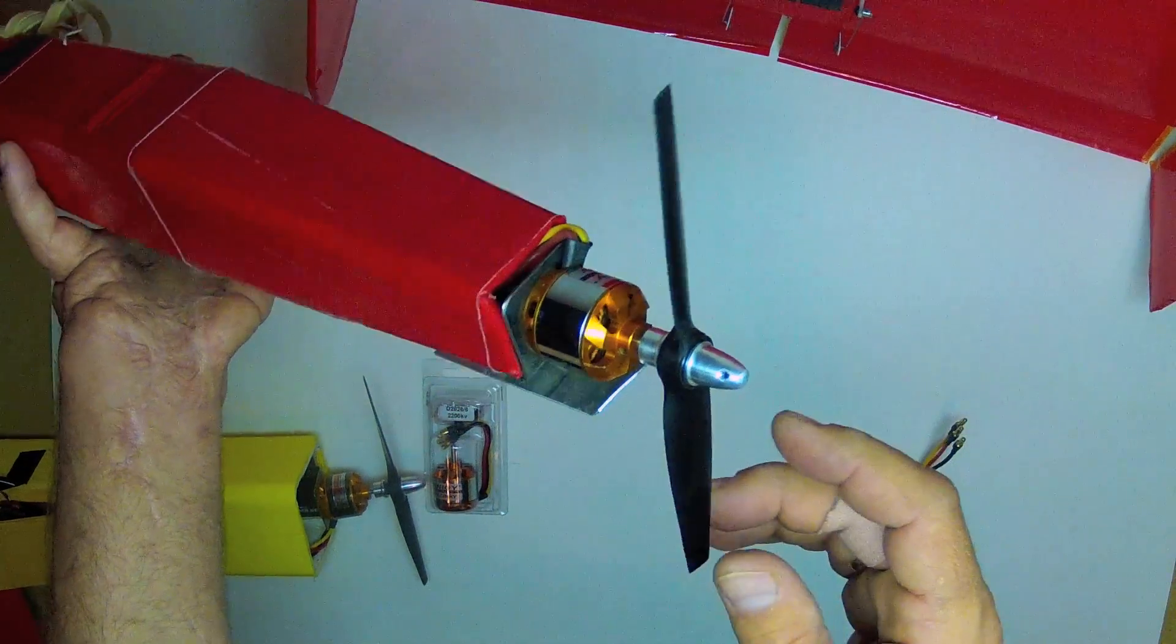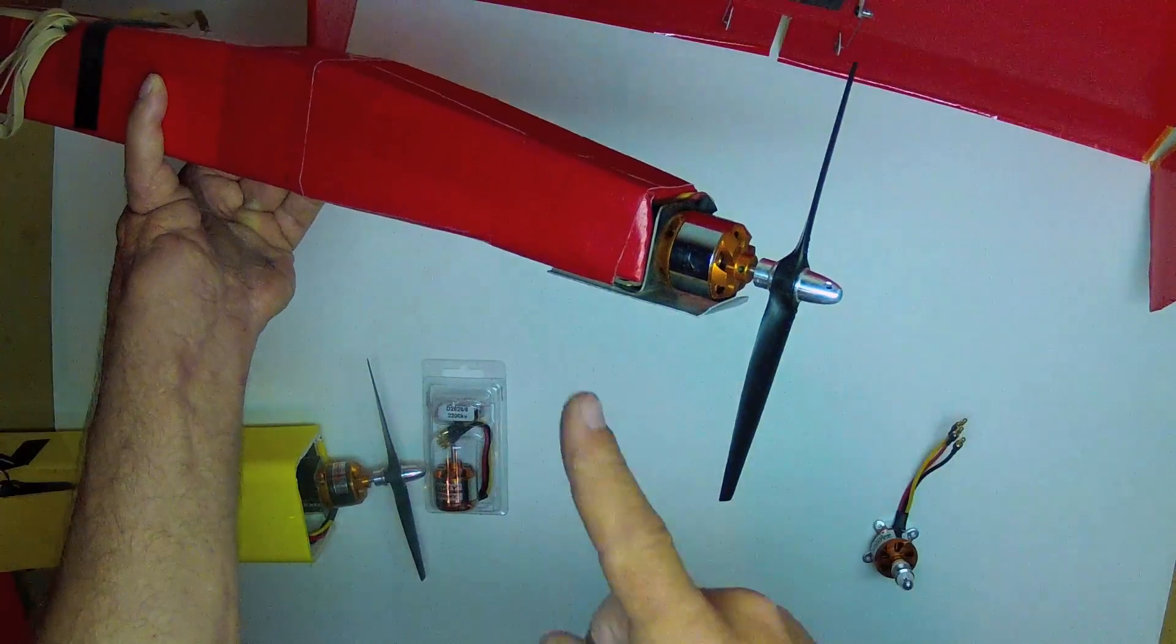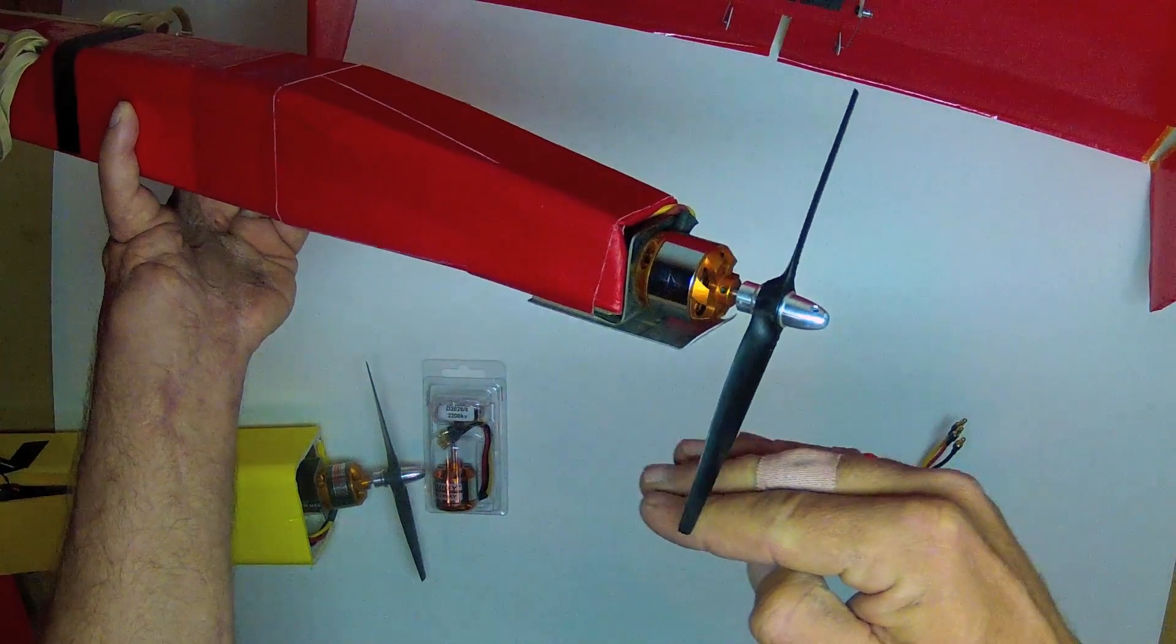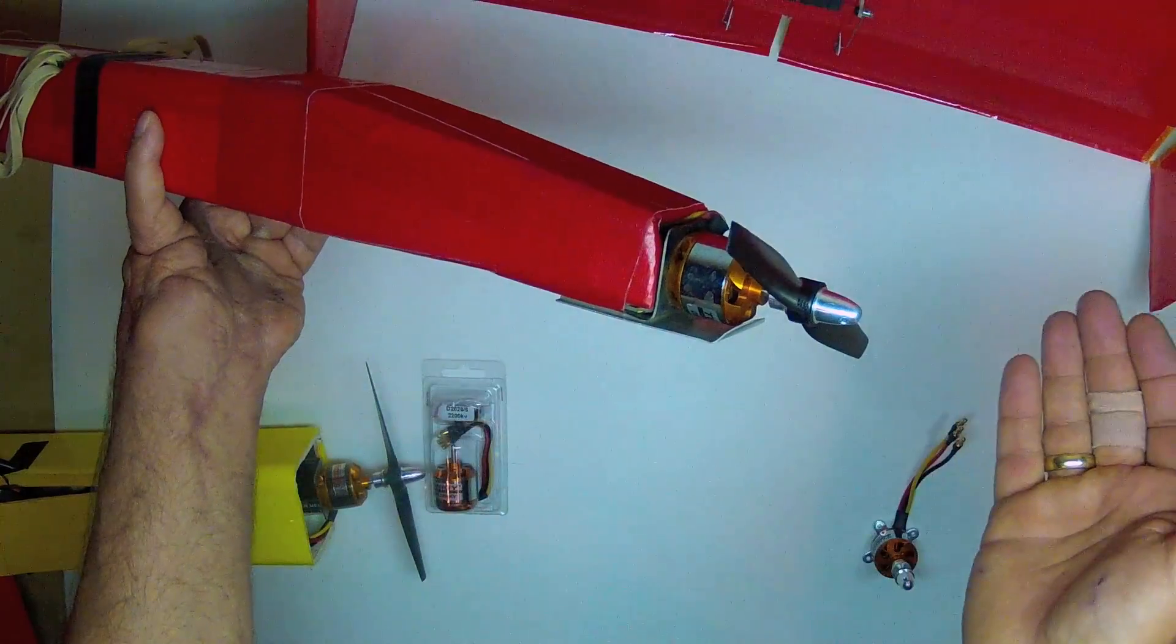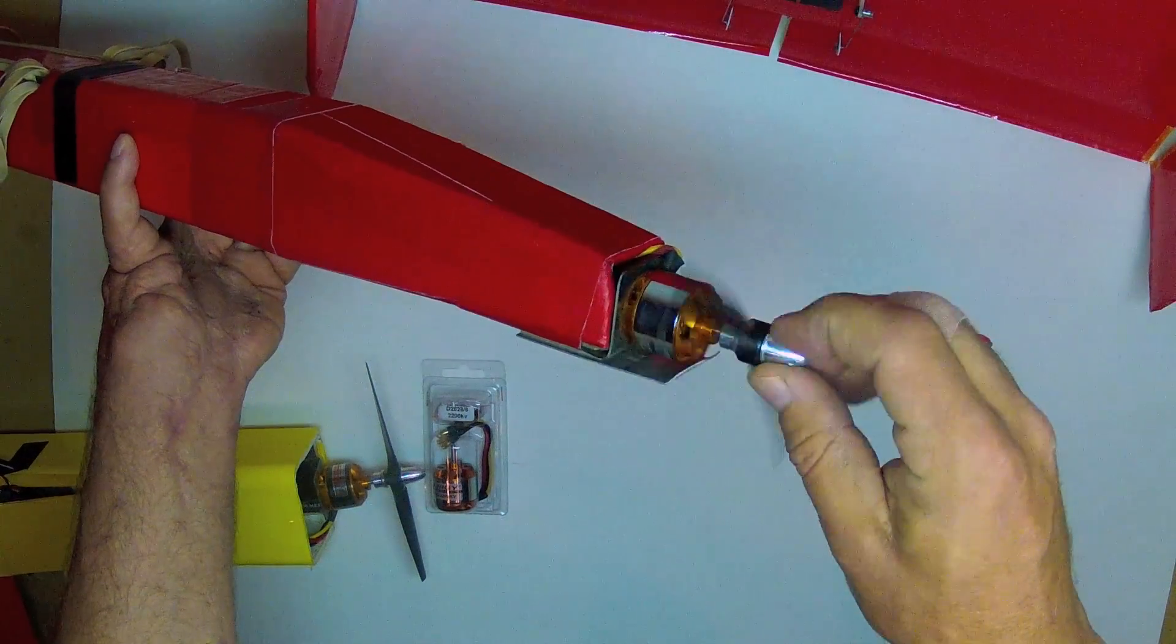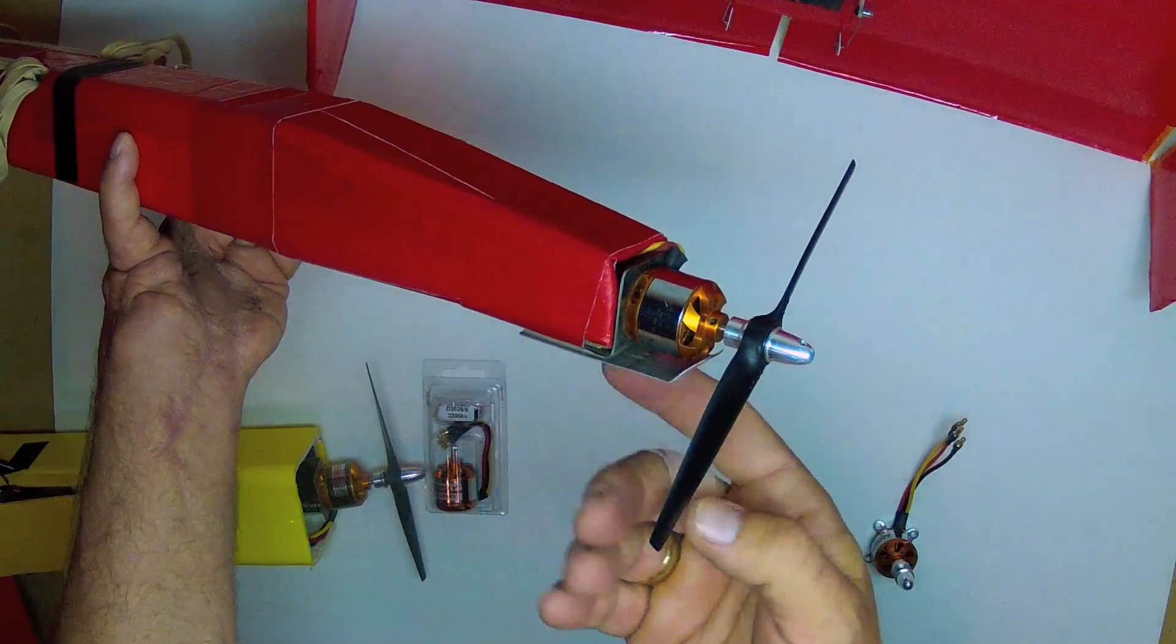And using this method, I've never broken a prop, even if the prop is pointing down towards the ground as it touches. Upon a touchdown, it just moves the propeller out of the way and it just lands right on the belly, no problem. It's when you land with a spinning propeller, that's what tends to break props.